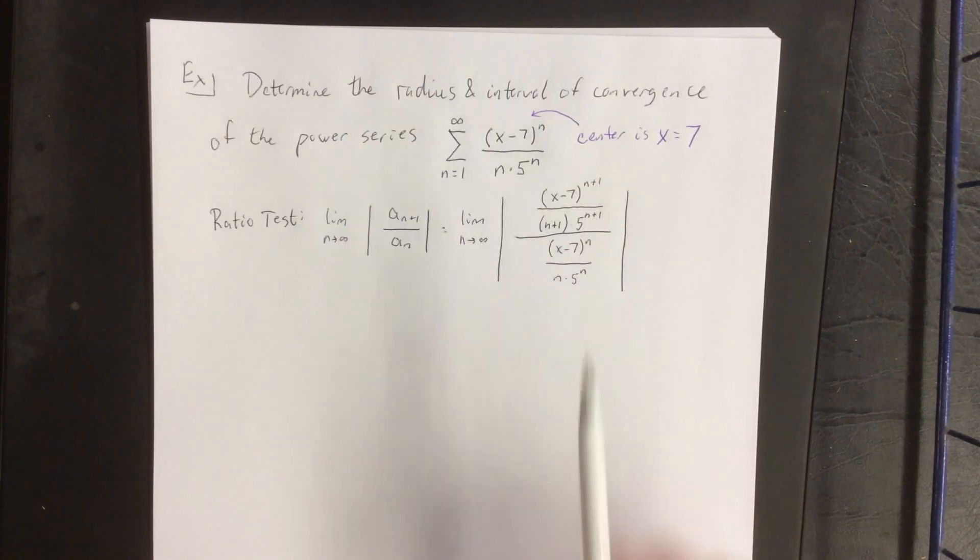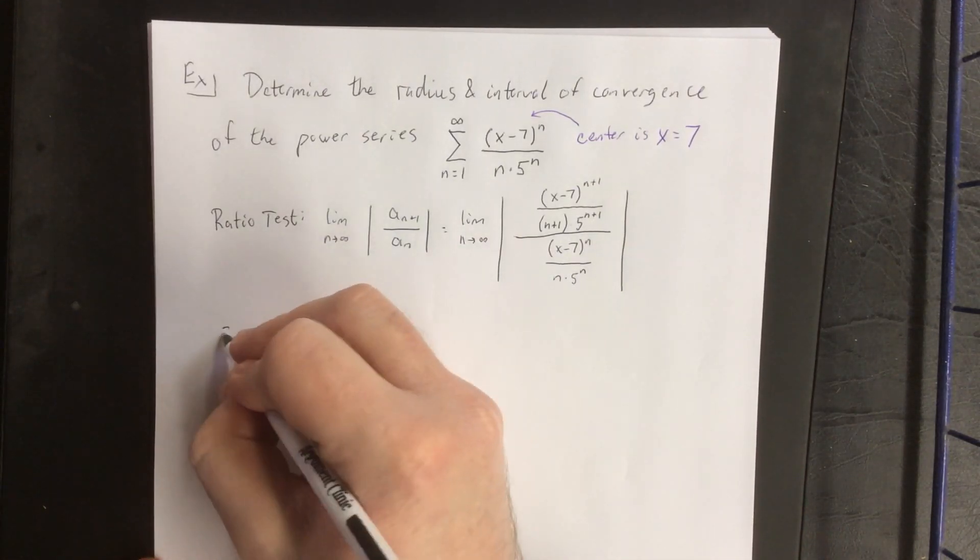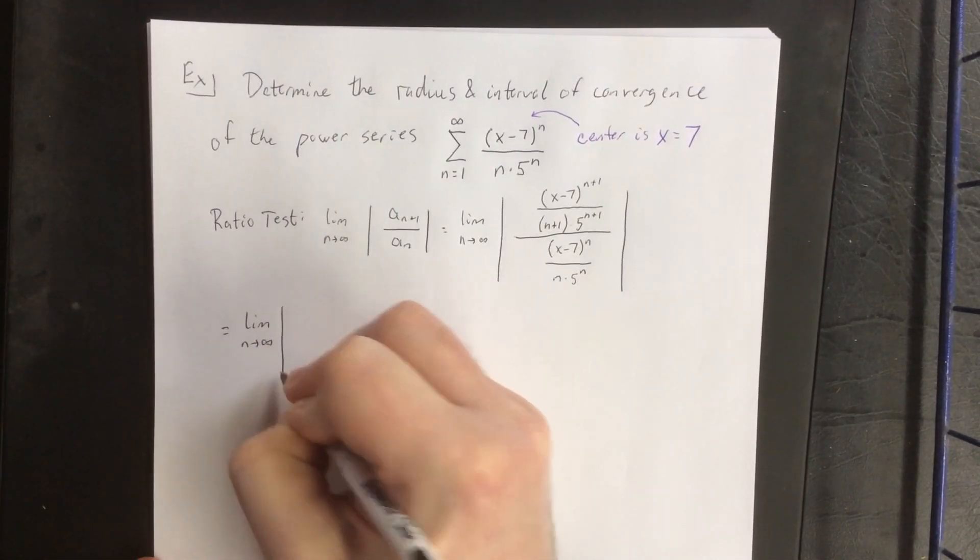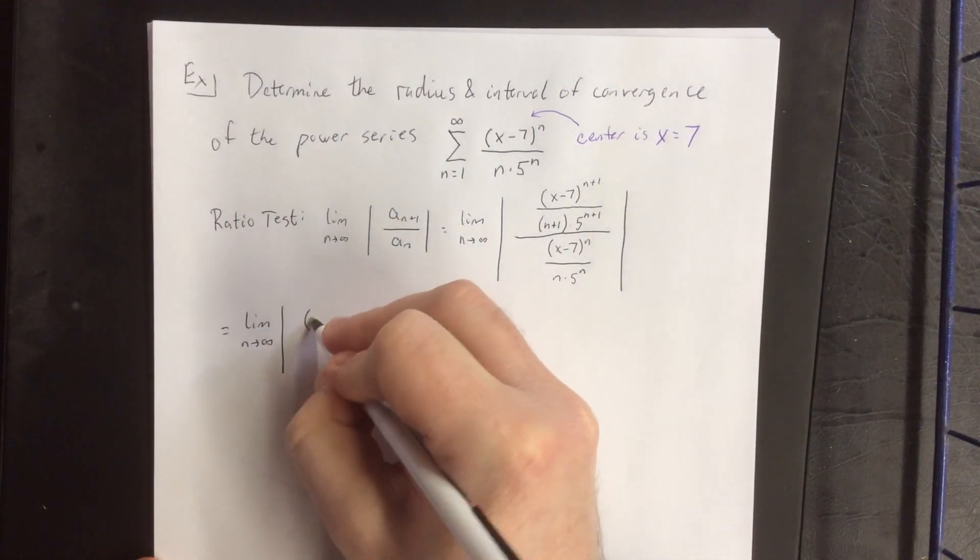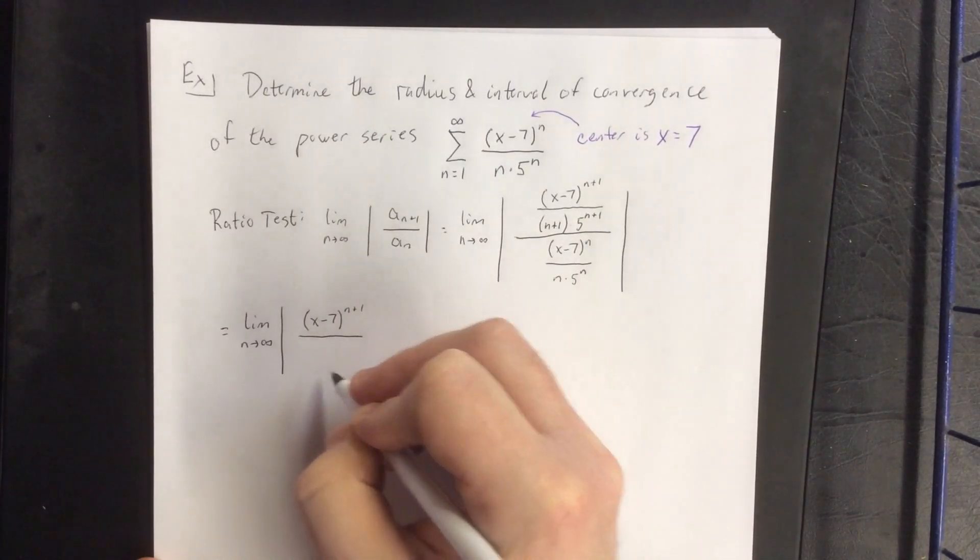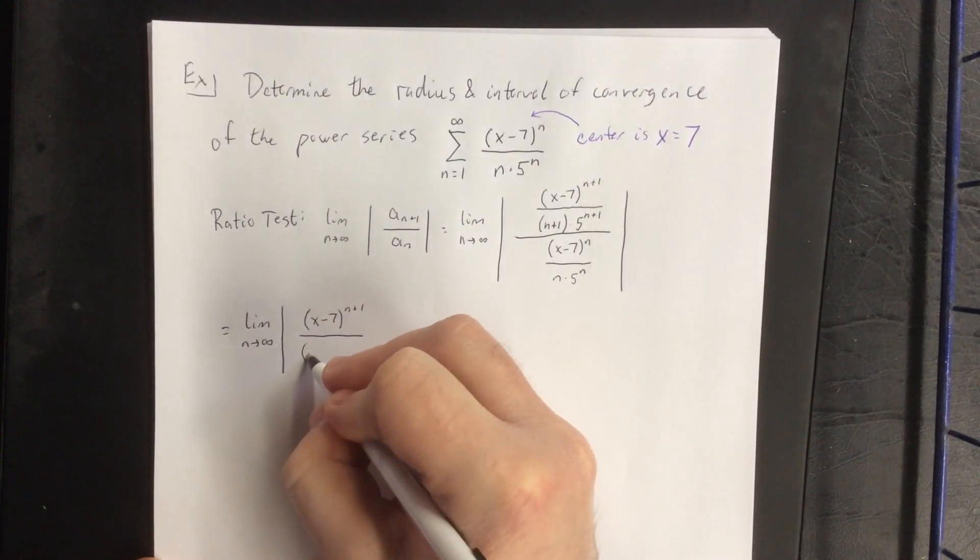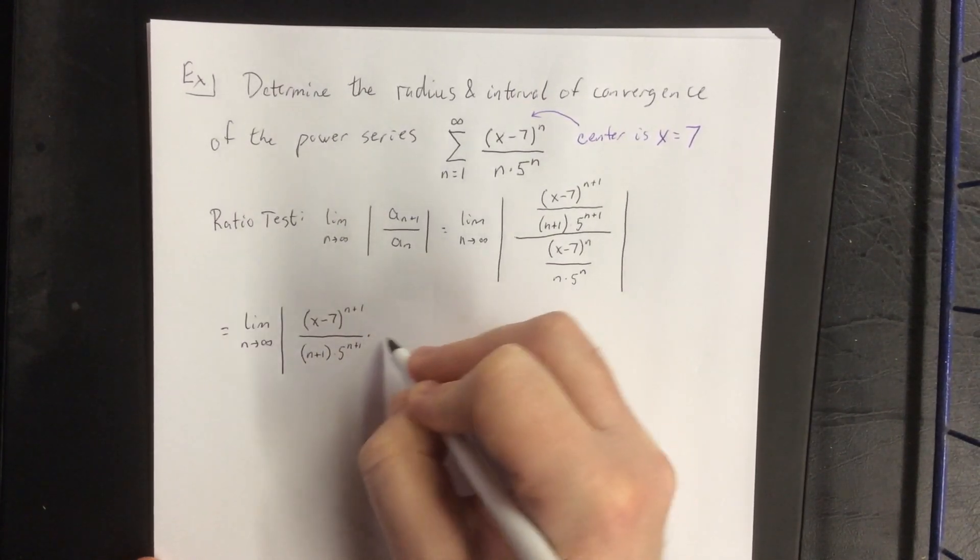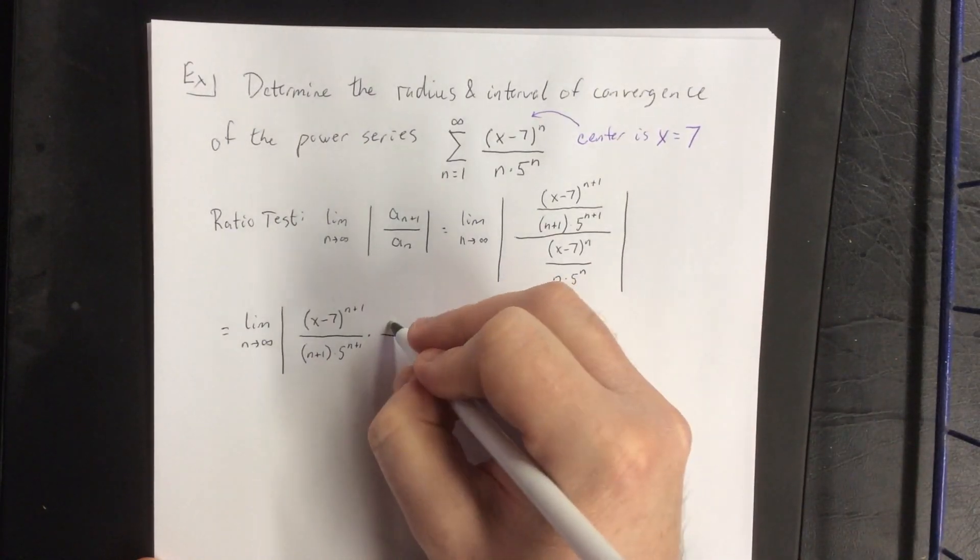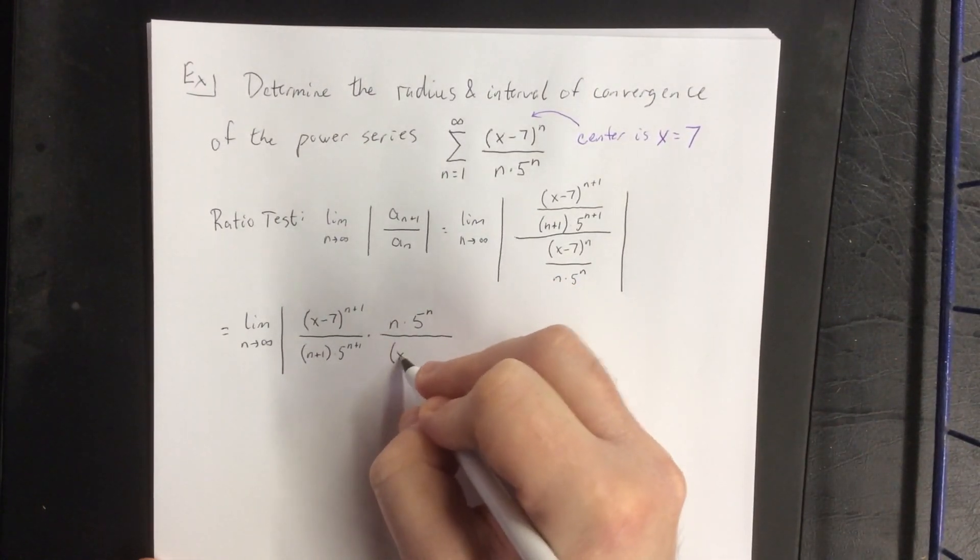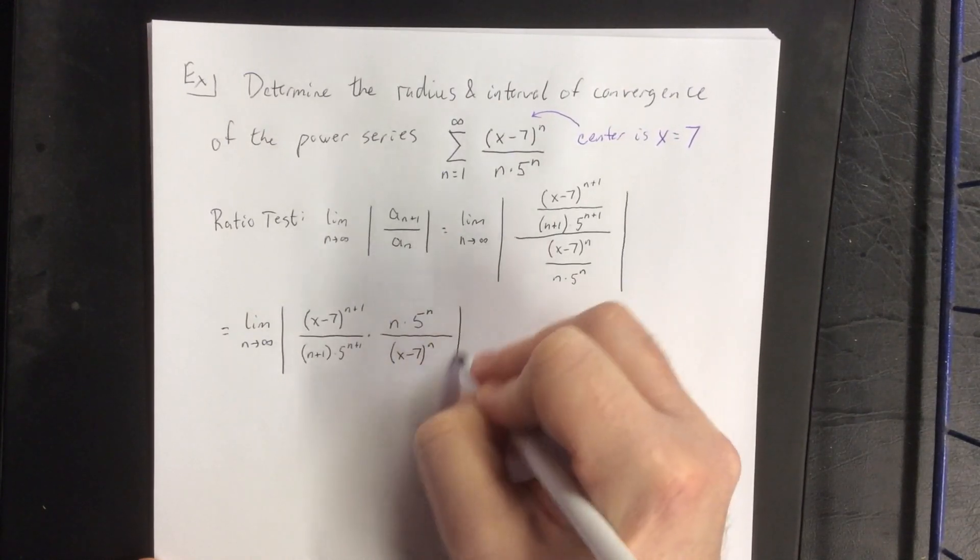Because we have a rather large fraction divided by fraction situation, as is typical, we will multiply by the reciprocal of the denominator. So x minus 7 to the n plus 1 power over n plus 1 times 5 raised to the n plus 1 times n times 5 raised to the n power.